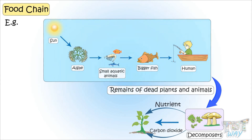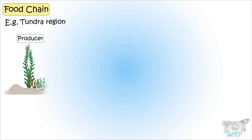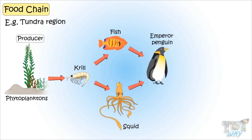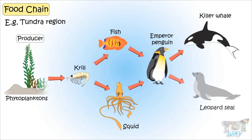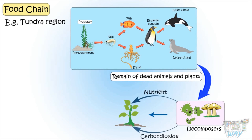Here is another food chain from the tundra region. As we know, all food chains start from producers. Here are two: first are very small plants called phytoplankton, which are eaten by krill. Krill is eaten by squids and fish. Squids and fish are eaten by emperor penguins. Emperor penguins are eaten by killer whales and leopard seals. And everywhere, dead remains are decomposed by decomposers and are converted to nutrients for soil and carbon dioxide for air.